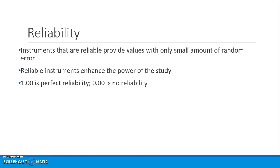Instrument reliability is important. People often look at perfect reliability as being 1 and no reliability as 0, and this is most of the time established when we look at internal consistency coefficients, correlation coefficients, and the like.